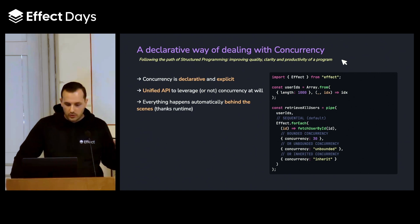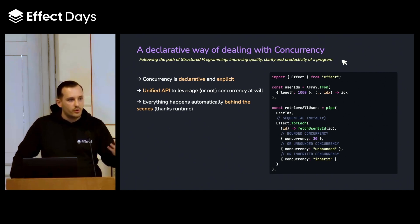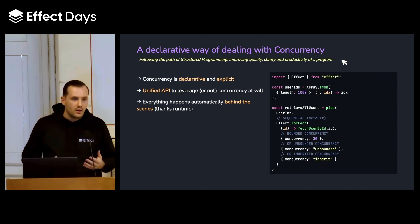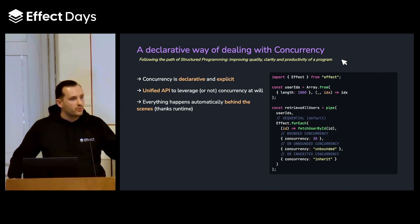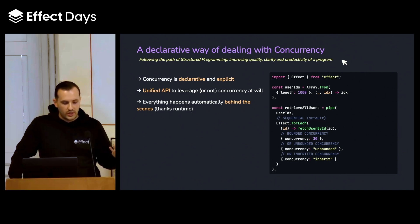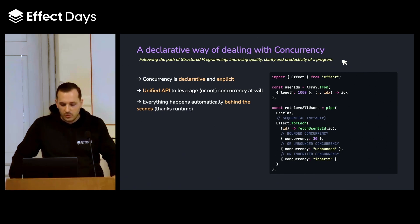A good point with Structured Concurrency — beyond all the guarantees it provides — is the nice and declarative API it offers for controlling execution. Whether you need to make a function concurrent, opt in for a specific kind of concurrency, or keep it sequential, you just keep the same API with no changes needed. Everything happens behind the scenes; we don't need to really care about it, as it's all managed by the runtime by default.